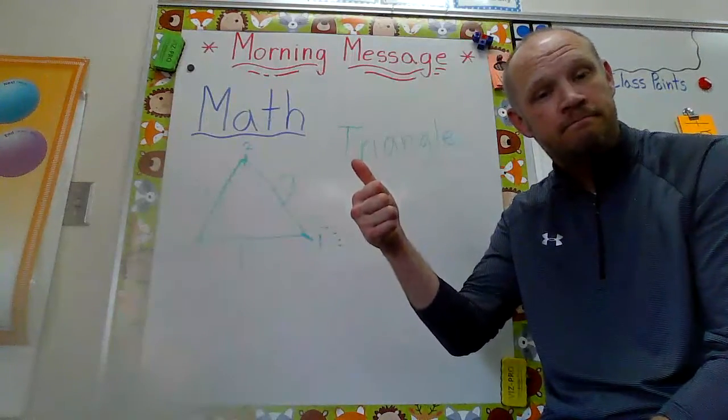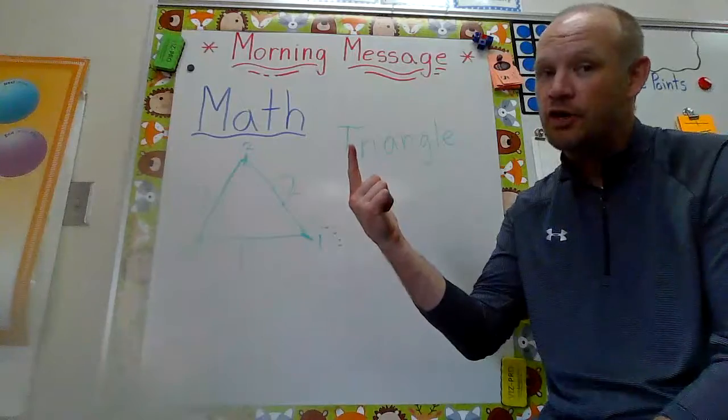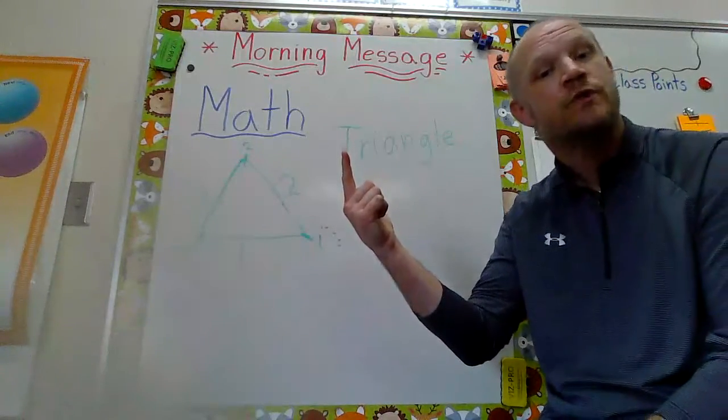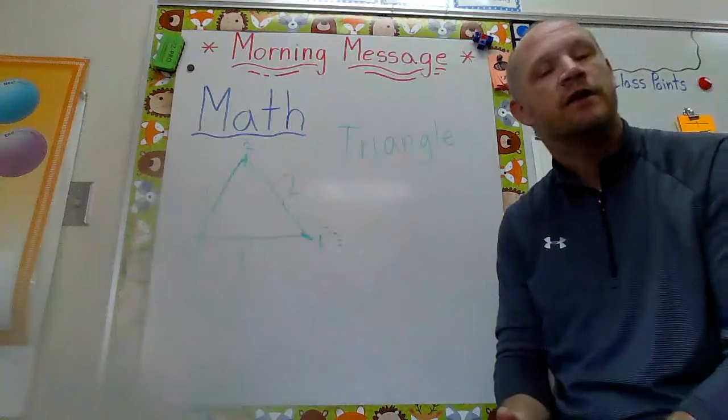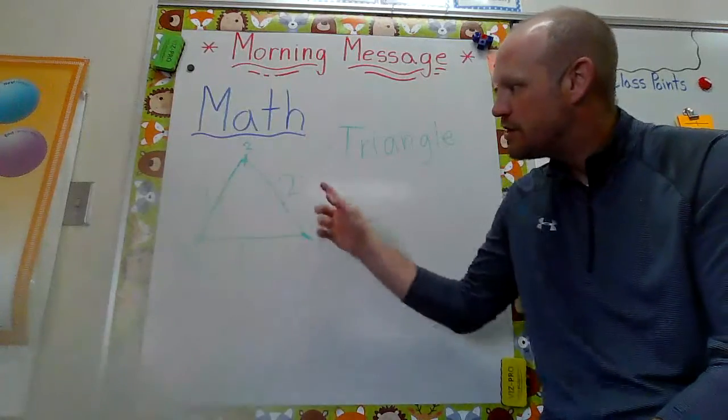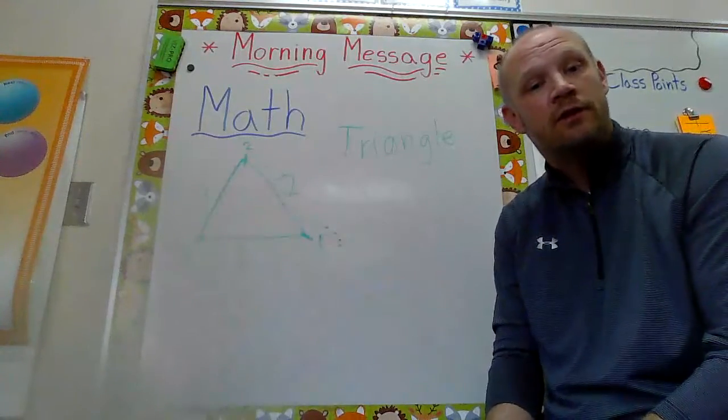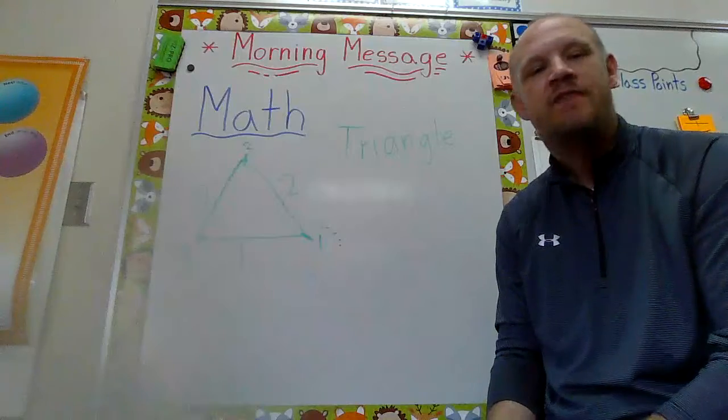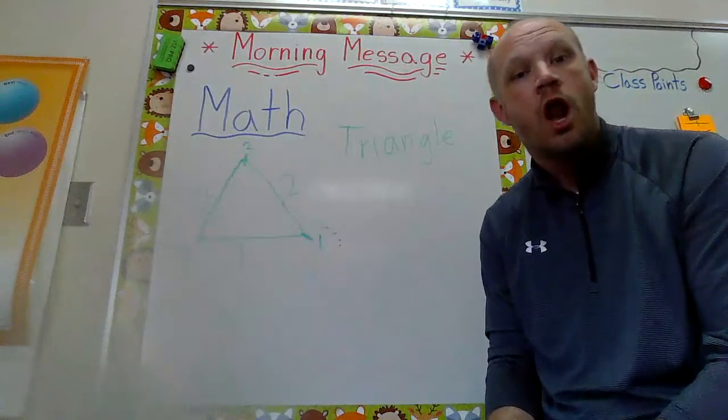They're flat. They have curved lines like a circle or straight lines like a triangle and a square. They have corners like a triangle and a square has. And they're always closed.